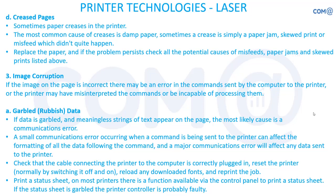Image corruption — gobbled or rubbish data — means meaningless strings of text such as dollar signs and special characters appear on the page instead of the intended content. This is caused by a communication error between the printer and computer. Try uninstalling and reinstalling the printer, ensure the firmware is updated, verify the cable connection is properly plugged in, change the USB port if required, check the online status of the printer, and then attempt printing again.